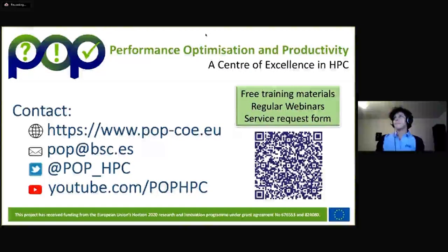Here is just an example to show you the POP metrics in action. These metrics are calculated for an application on different core counts, and it comes from one of our actual assessments. We collect trace data for this application and calculate the table of POP metrics. You can see that these metrics suggest that serialization, the metric with a low value, is the cause of poor scalability in this application.